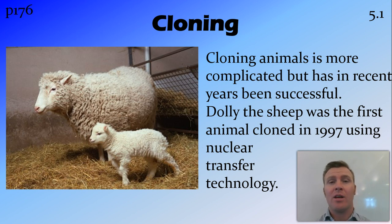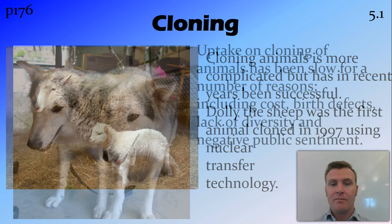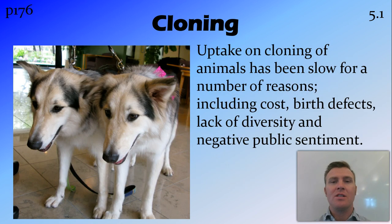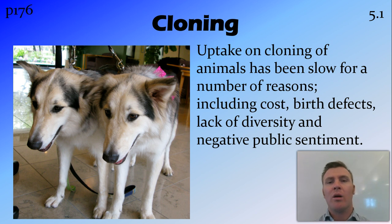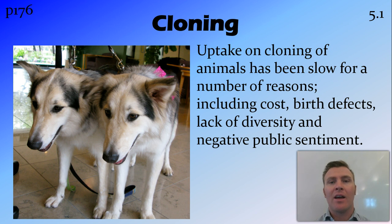In 1997 we cloned the first sheep, Dolly, using nuclear transfer technology. However, it's not done on a huge scale, and there are a number of reasons for this, including how expensive it is to create a clone. Even if you've got an organism with pretty desirable characteristics, it's generally not worth the money when you could just use something like artificial insemination to get an organism with similarly desirable characteristics. There are also problems with birth defects, lack of diversity within the population, and the general negative public sentiment that goes with the word cloning.